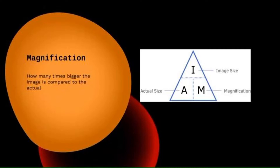An important thing to know when looking at cells is that we use measurements smaller than a centimeter — we use something called a micrometer. There are 10,000 micrometers in a centimeter. To give you an idea of scale, a mitochondrion is about one micrometer in diameter, meaning one ten-thousandth of a centimeter. That's how tiny we're talking.